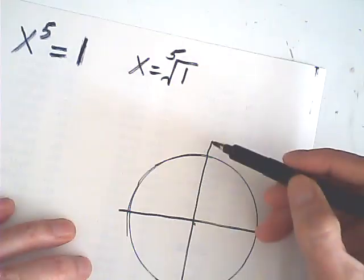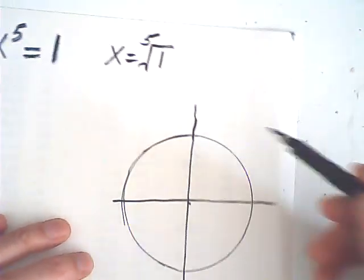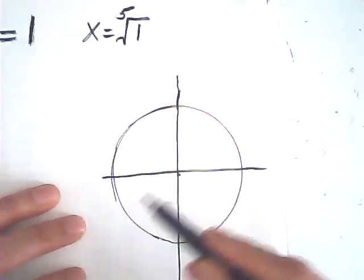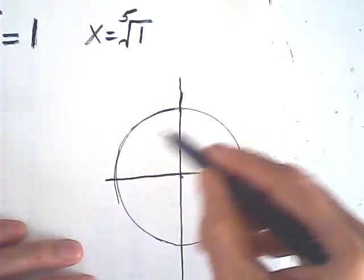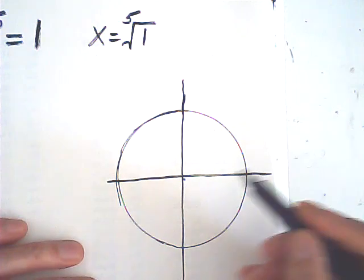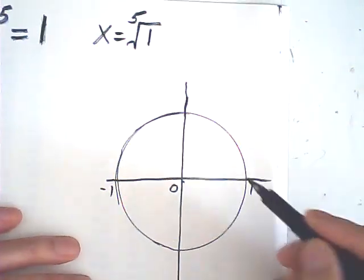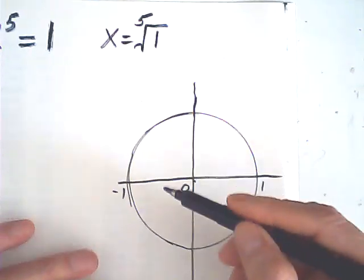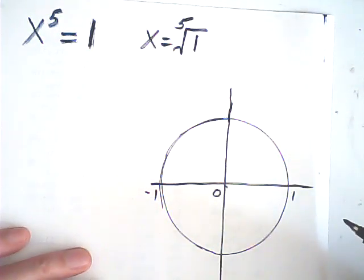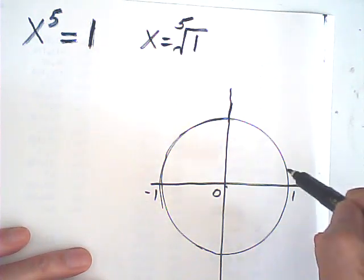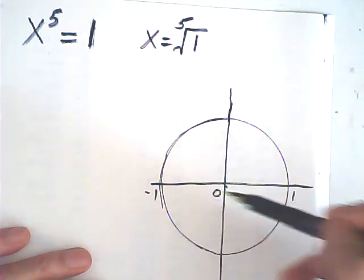And the fifth root of one are five points on this unit circle, and they are equally distance apart, well, the distance along the circle.